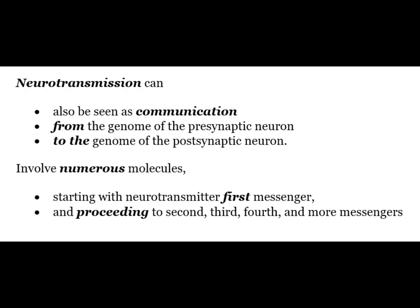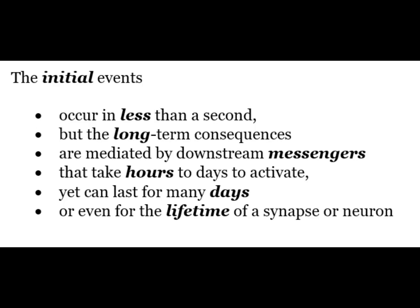Signal transduction cascades. Neurotransmission can also be seen as communication from the genome of the presynaptic neuron to the genome of the postsynaptic neuron, and involves numerous molecules starting with the neurotransmitter as 1st messenger and proceeding to 2nd, 3rd, 4th and more messengers. The initial events occur in less than a second, but the long-term consequences are mediated by downstream messengers that take hours to days to activate and can last for many days or even the lifetime of a neuron.